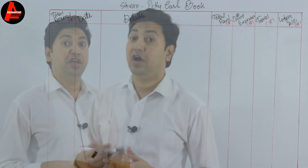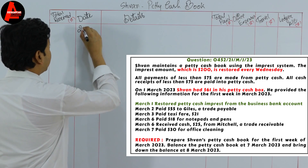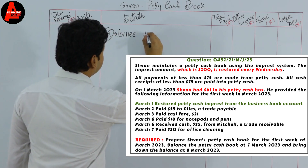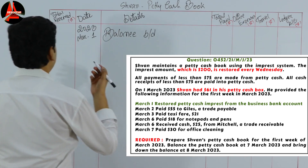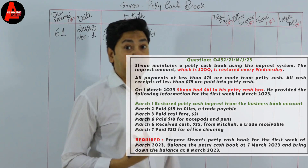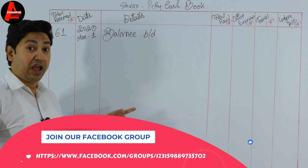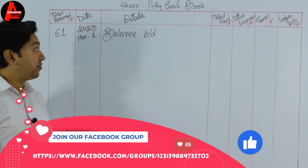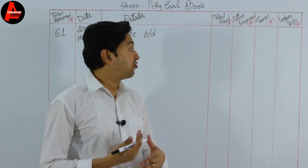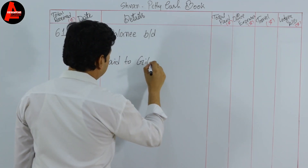On 1st March 2023 the opening balance is $61. We write the date — March 1, 2023 — then 'Balance b/d' (balance brought down) as our opening balance, and enter $61 in the receipts column. Now we record all the transactions from the question one by one. The amounts given with each transaction are written in the total paid column, then spread among the three analysis columns.